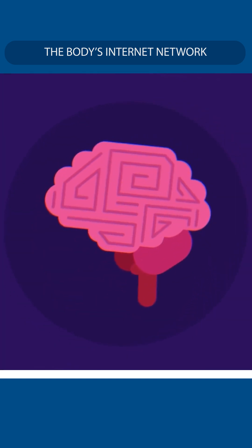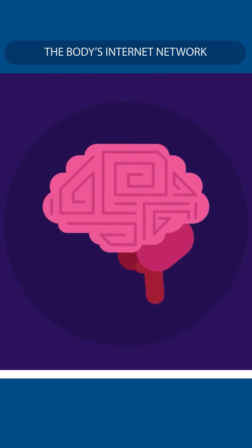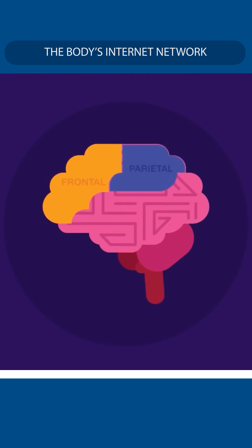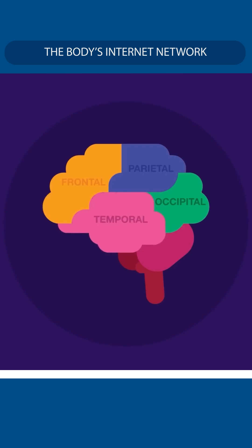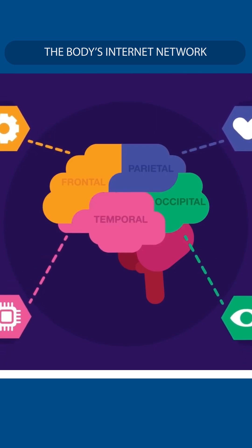Each cerebral hemisphere has four lobes: namely the frontal lobe, parietal lobe, occipital lobe, and temporal lobe. Each lobe performs different functions.